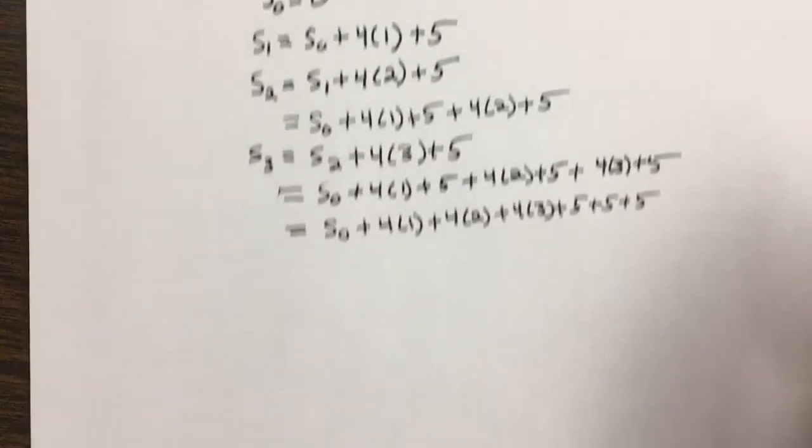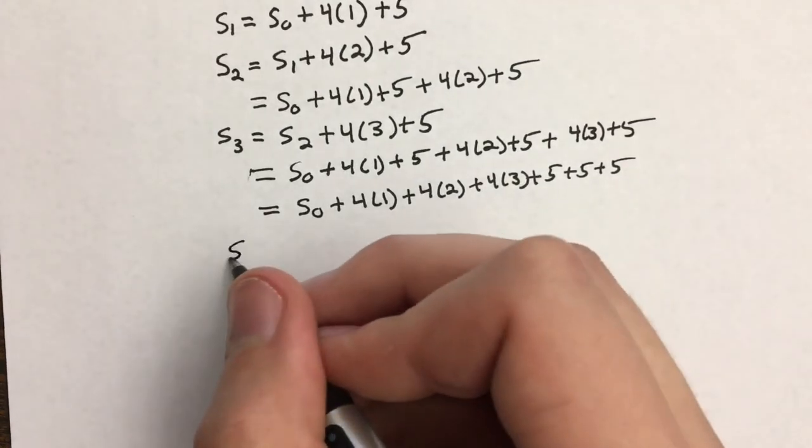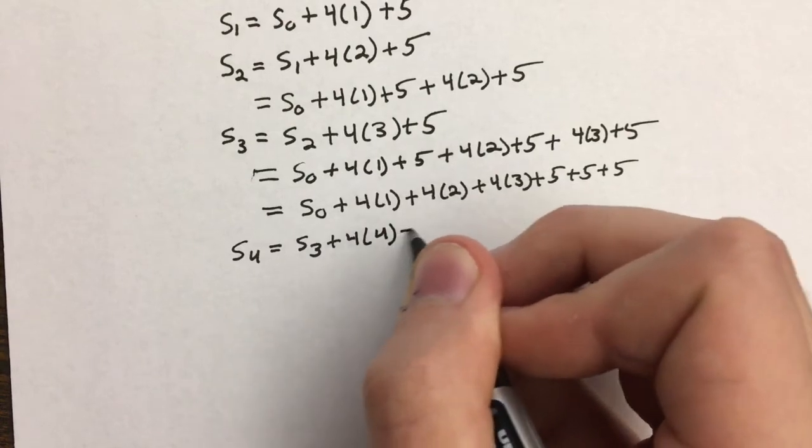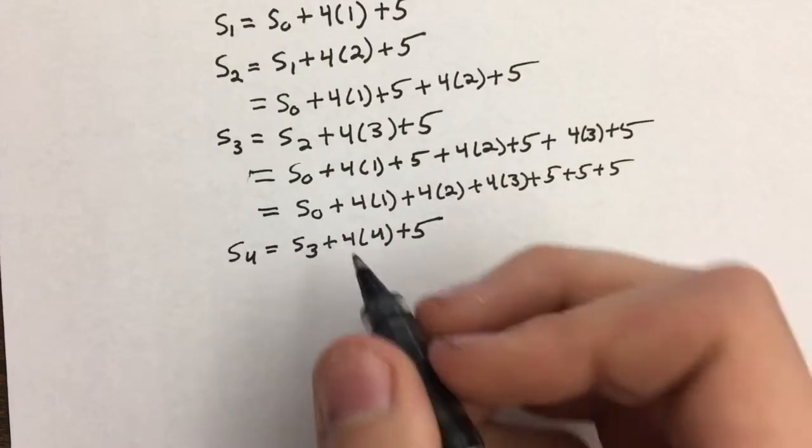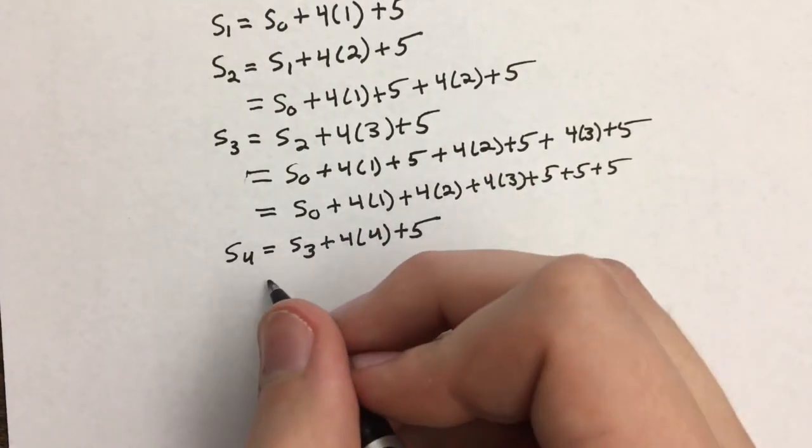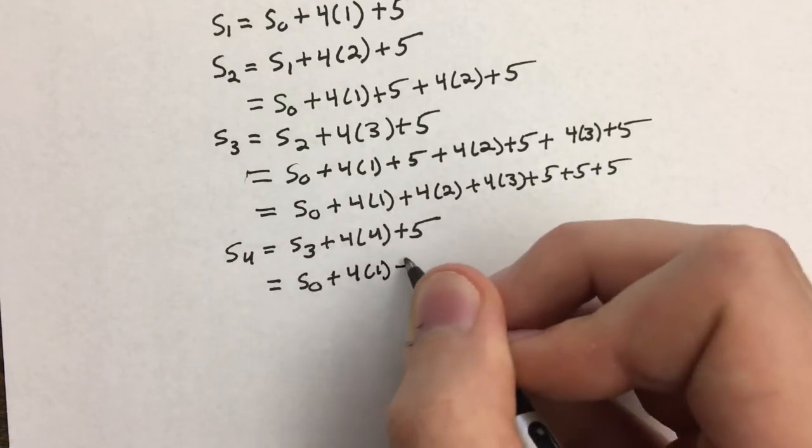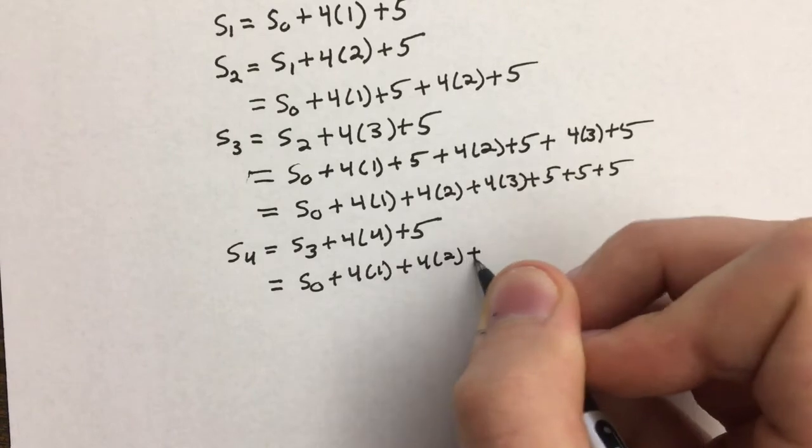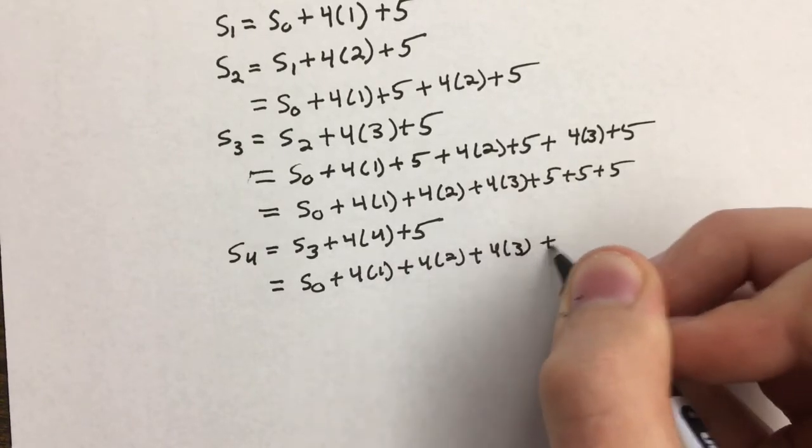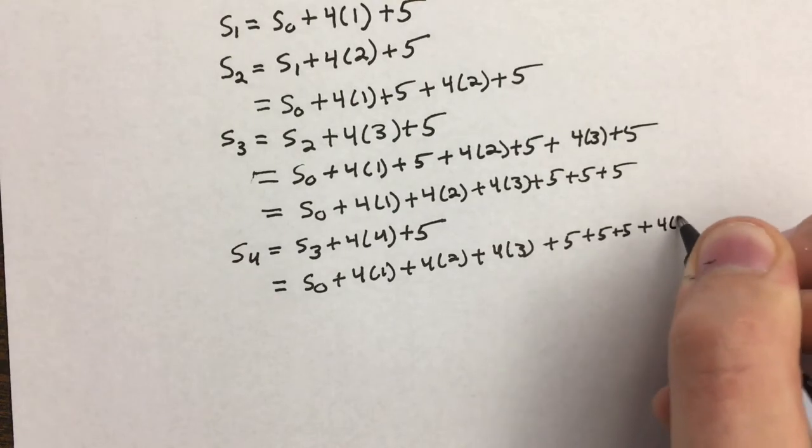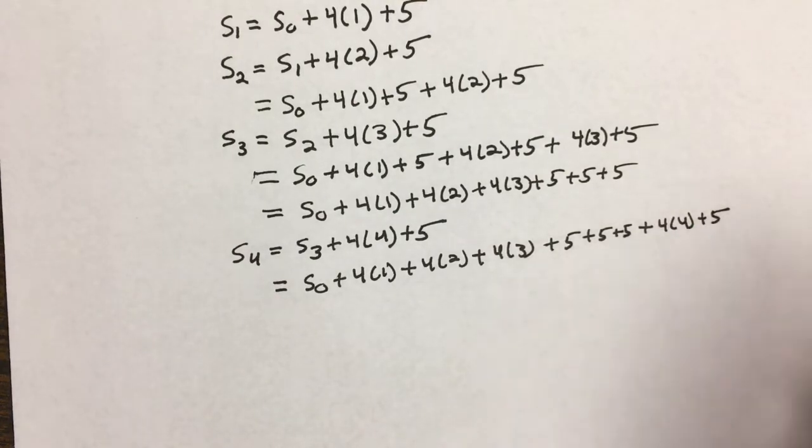Okay, let's do one more. Let's find the fourth term here. So S sub 4 equals S sub 3 plus 4 times 4 plus 5. So this is going to become S sub 0 plus 4 times 1 plus 4 times 2 plus 4 times 3 plus 5 plus 5 plus 5 plus 4 times 4 plus 5.